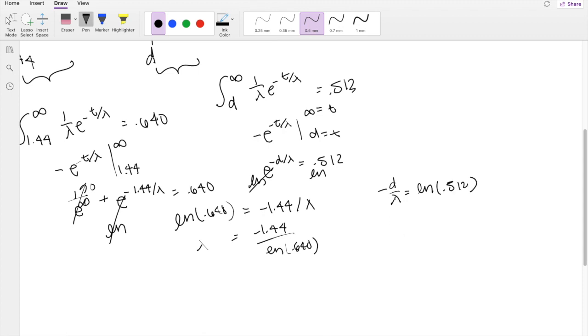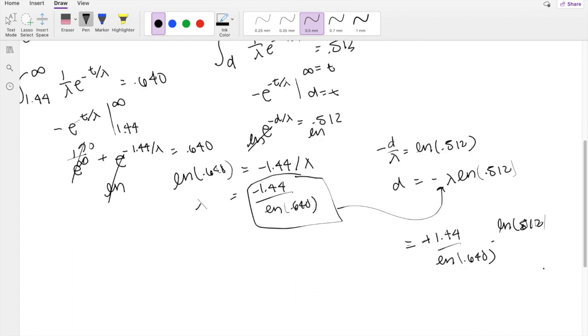So then I can just bring the lambda to the other side. d is equal to negative lambda times natural log of 0.512. Where lambda is equal to this thing right here. So plugging that in, you get negative, negative, so that's positive, 1.44 over natural log of 0.640 times natural log of 0.512. So this would be equal to, d is equal to 2.16, which is your answer.